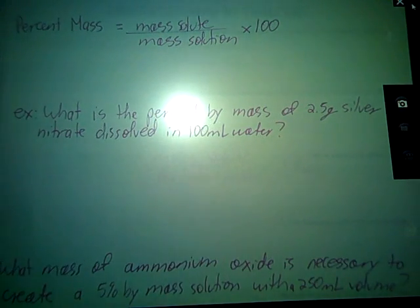So mass solute divided by mass solution, and then the whole thing times 100, since it is a percent mass. One such problem that you might see in a chemistry class is this first example here. It says, what is the percent by mass of a 2.5 gram silver nitrate dissolved in 100 milliliters of water?